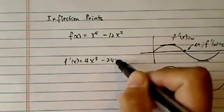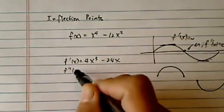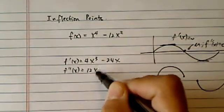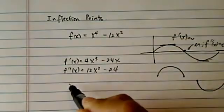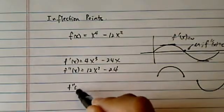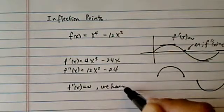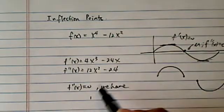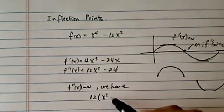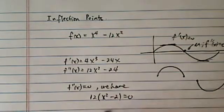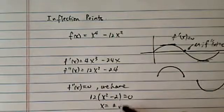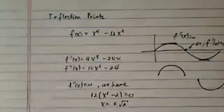The first derivative is 4x^3 minus 24x. Second derivative equals 12x squared minus 24. Setting it equal to zero, we have 12x squared minus 24 equal to zero, or x is equal to plus or minus radical two.